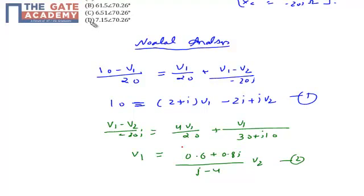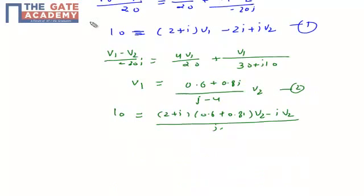Now put the value of V1 in equation number 1. So I can get the expression as 10 will be equal to (2 plus j) times (0.6 plus 0.8j) times V2 minus j times V2 by (j minus 4). So I can get the value of V2 as 170 upon (0.6 minus j26.2).